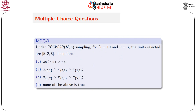Question 3 — under PPSWOR sampling with N equals 10 and n equals 3, the units selected are 5, 2, and 8. Therefore, which of the following is likely to be true: pi_2 is more than pi_8, pi_5 is greater than some other value, or various other options — or none of the above? This is a very good problem about the ordering of first order inclusion probabilities under without replacement sampling.